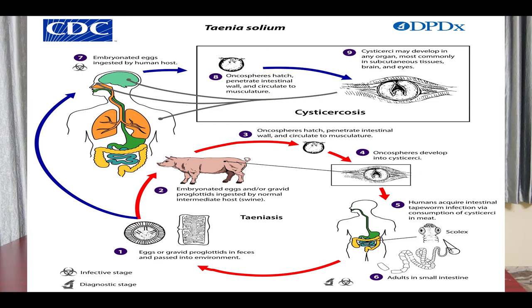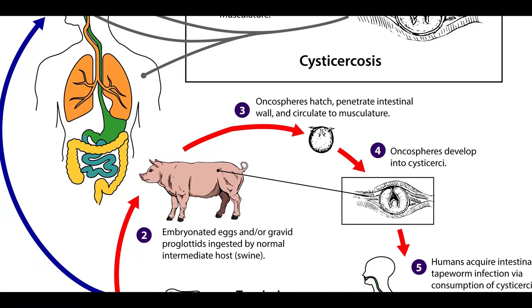The terminal gravid proglottids detach in groups of four or five and pass out of the body of the host along with the feces. Further development of the onchospheres does not occur until they enter the body of the intermediate host. This happens when an infected person defecates on open ground and pigs — the intermediate host — ingest the onchospheres.